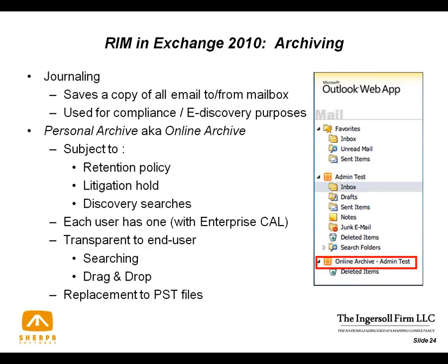A major item in records management is archiving. Exchange 2010 has introduced the personal archive — also called the online archive — as another tool in the belt. Journaling, while not an archive in and of itself, has facilitated many third-party archiving products by saving a copy of all email going to and from selected mailboxes. It's a resource-intensive approach with not much granularity. To help with archiving and to consolidate into one Microsoft platform, they've added personal archives — every user with an enterprise account gets one, at the same level as their mailbox, completely transparent to users.